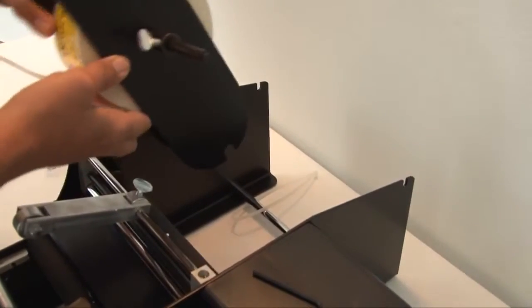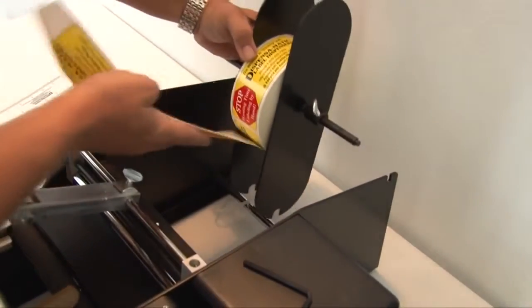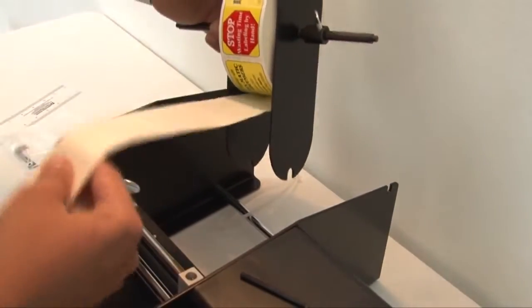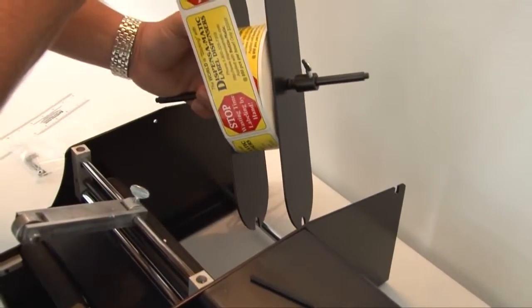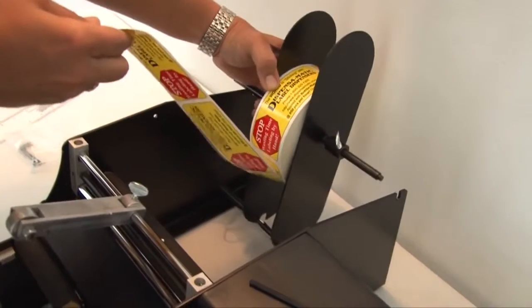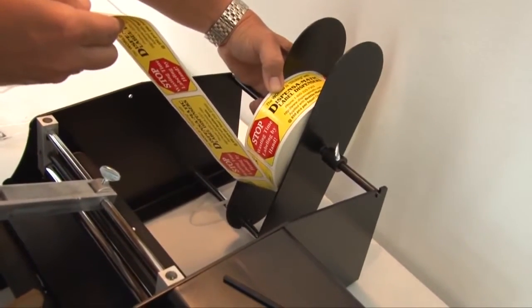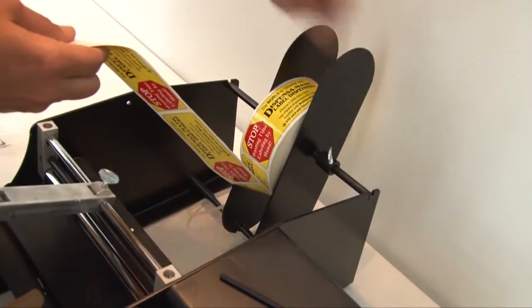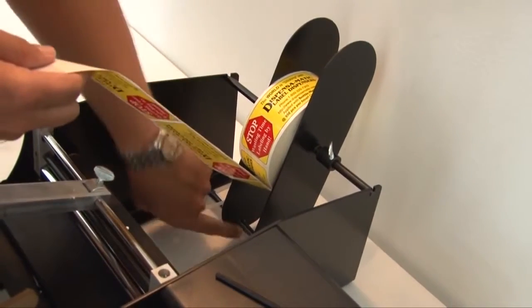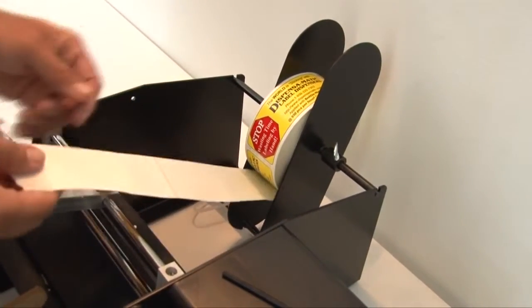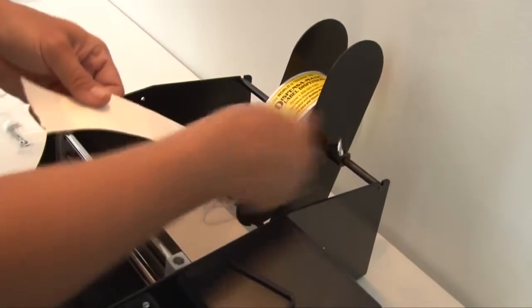When installing the roll assembly onto the machine make sure that the labels are facing down and the roll is unwinding from the bottom as shown. The first thing you want to do when you install the roll assembly onto the machine is align the slots and the guides with the rod on the bottom of the machine. Then you want to align the roll holder rod with the slots on the side frame.